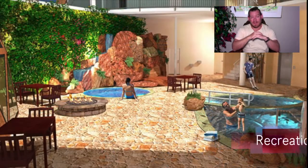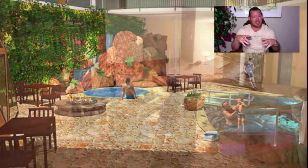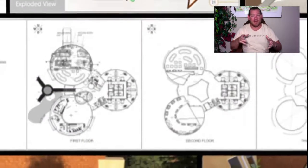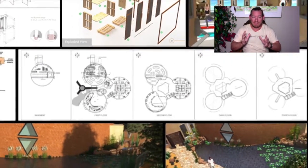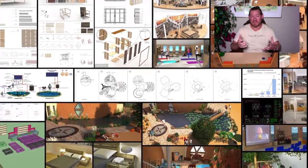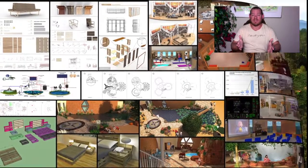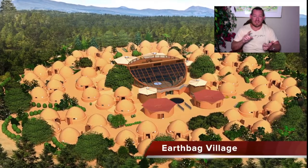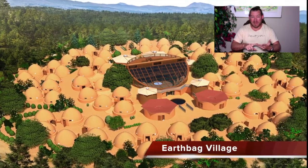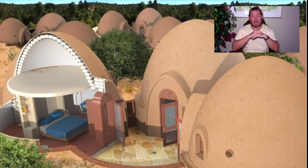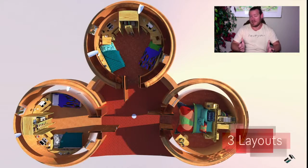If you look at everything happening in the background — the different village models, the open source education program, the highest good lifestyle aspects, social architecture, highest good economic models — all of these things are being put together to create a complete model of systems for sustainable community creation, covering all aspects of the human experience to create a sustainable civilization that will benefit all life on this planet.